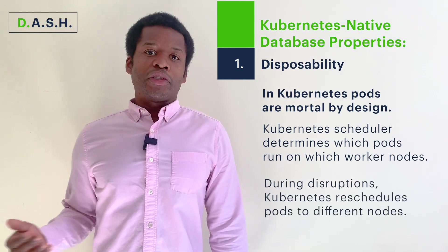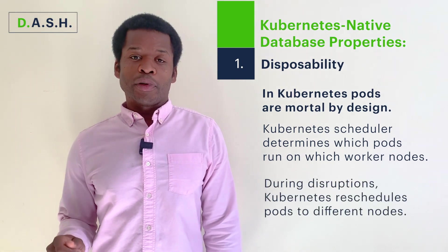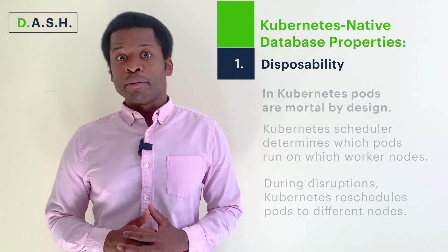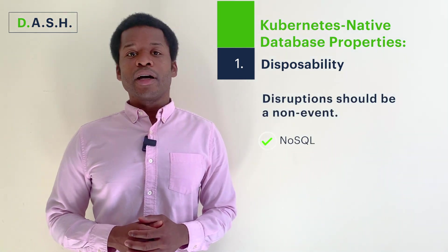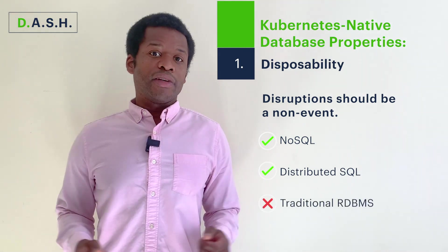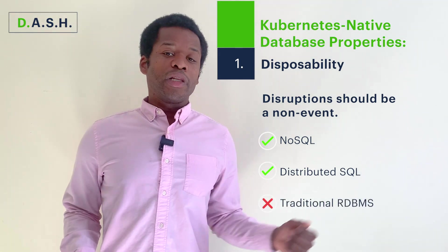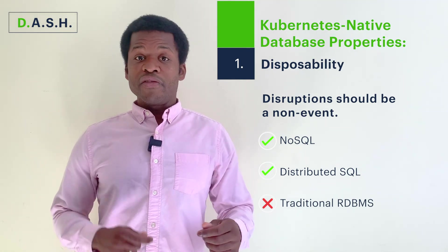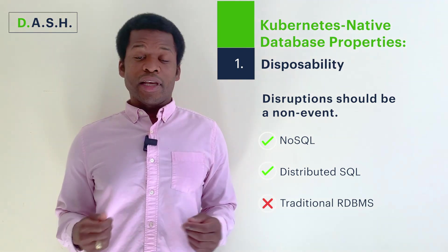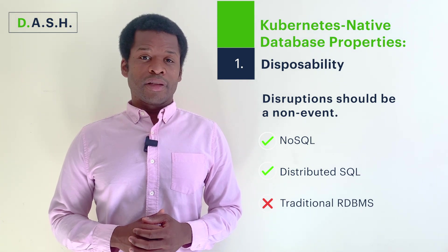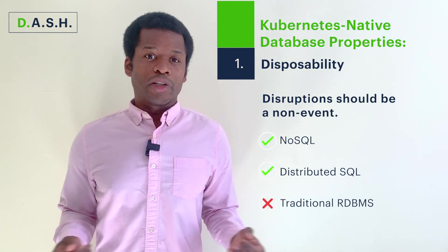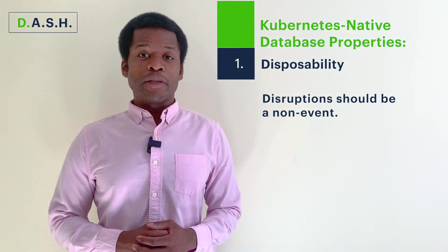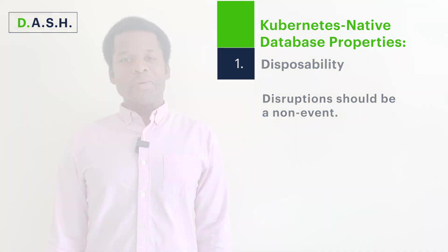And when these disruptions occur, Kubernetes reschedules pods to more suitable nodes. In NoSQL databases like MongoDB and distributed SQL databases like CockroachDB, this is a non-event. However, in traditional relational databases, users may be impacted because of the way failover is handled. It can result in inconsistent data. So to summarize, machines are expected to go down, and databases with the disposability property make this a non-event.